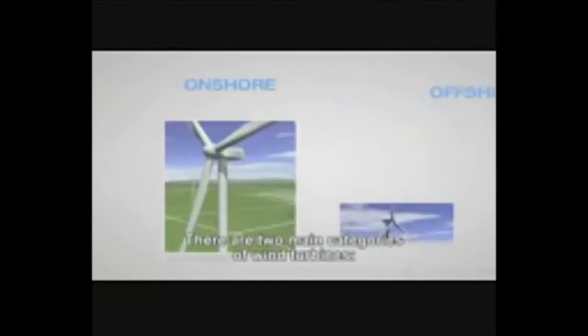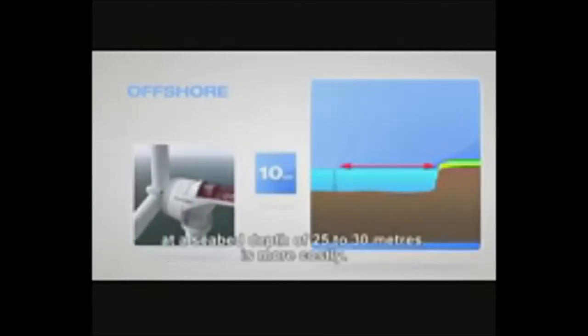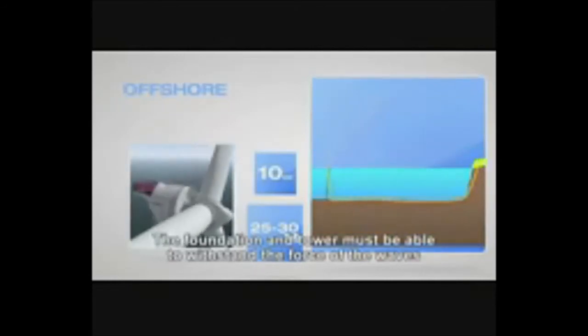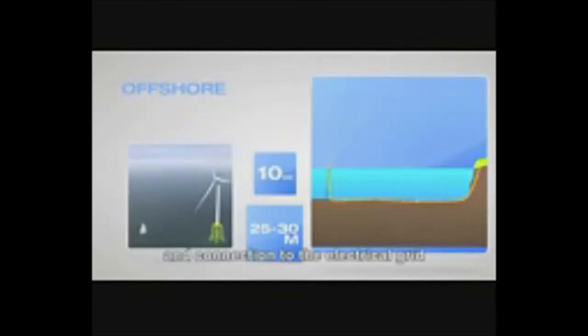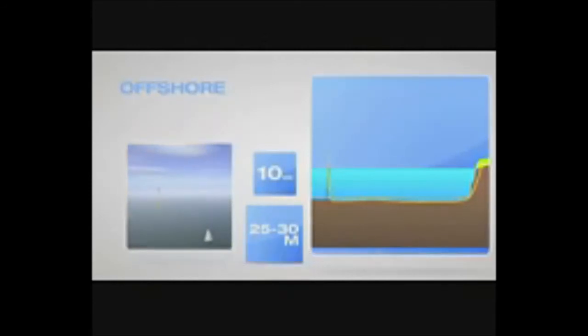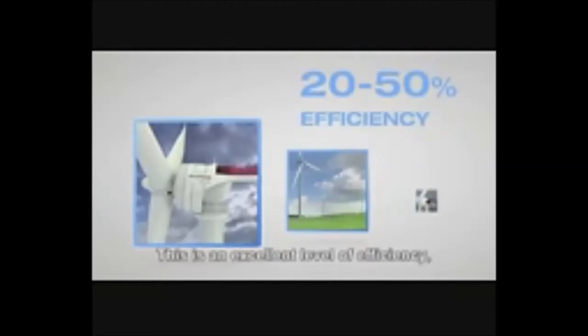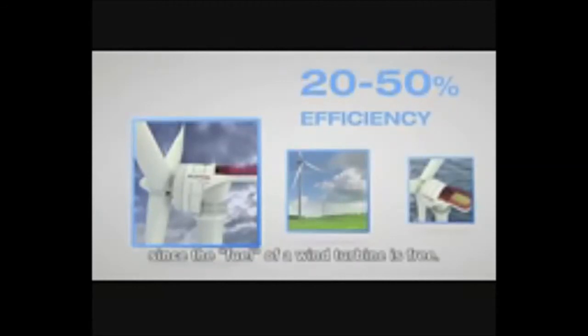There are two main categories of wind turbines: onshore and offshore. Offshore wind turbines are usually installed some 10 kilometres or more off the coast at a seabed depth of 25 to 30 meters, and are more costly — the foundation and tower must withstand the force of the waves, and connecting to the electrical grid means laying underwater cables. On the other hand, more regular winds offshore enable the generation of typically 6 megawatts of electricity, compared to 2 to 3 megawatts for onshore wind turbines. Modern wind turbines operate with an efficiency in the range of 20 to 50 percent — an excellent level of efficiency since the fuel of a wind turbine is free.